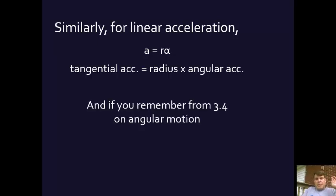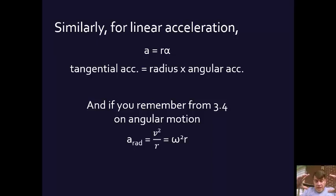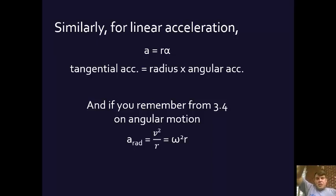There is one more thing. If you go back to section 3.4 in Young and Friedman on circular motion, the radial acceleration — the acceleration inward along any radius of the circle — equals v squared divided by the radius. It's a bit difficult to get your head around that there's an acceleration inward, but that's what keeps it turning in the circle. There has to be an acceleration toward the center for it to change direction — that centripetal acceleration, the centripetal force pulling it inward.